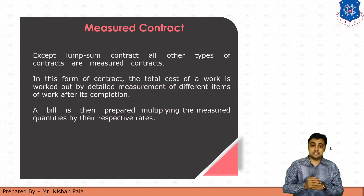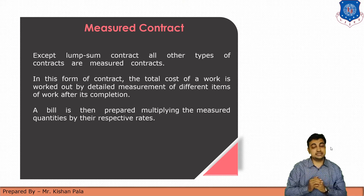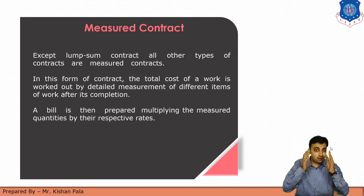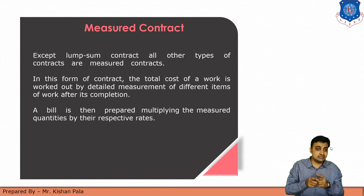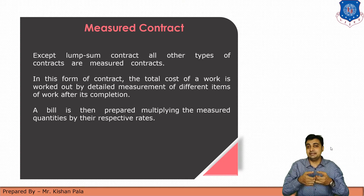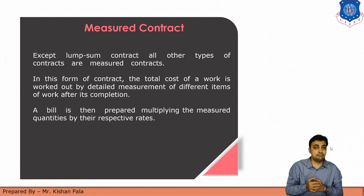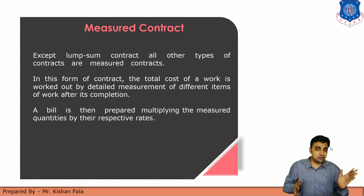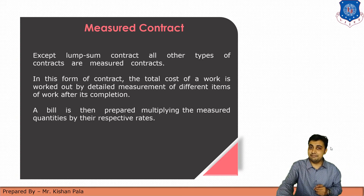The first type is the measured contract. Except the lump sum contract, all other types of contracts fall under the measured contract category. In this type, all tasks and activities are precisely calculated, with detailed measurements and item descriptions. The bill is then prepared by multiplying the measured quantity by its respective rates.